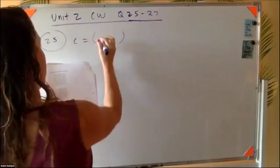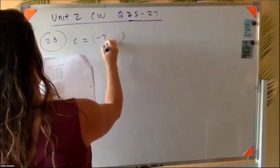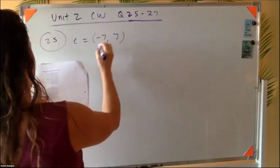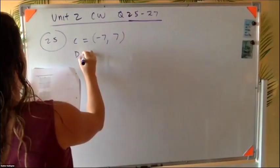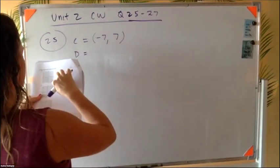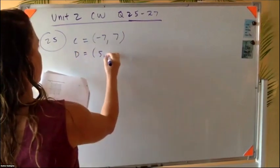See, it looks like we've got negative seven and then seven, and then D is equal to five, negative six.